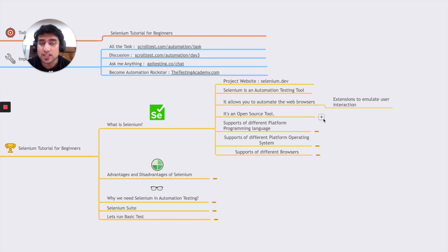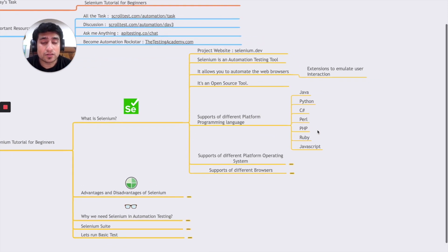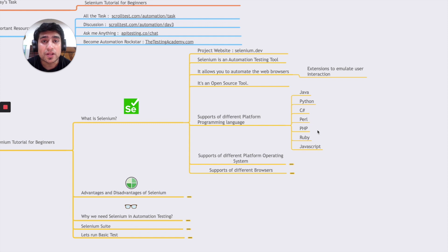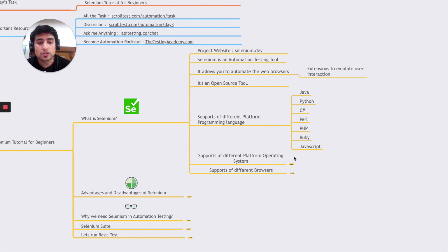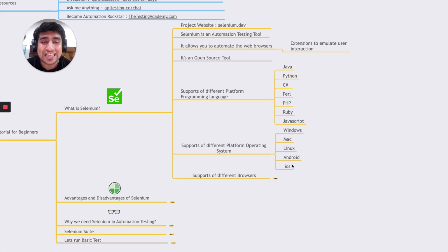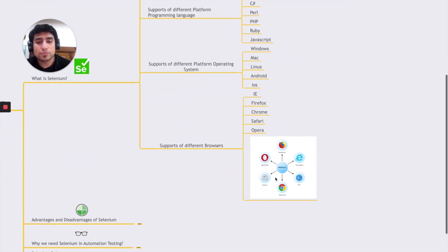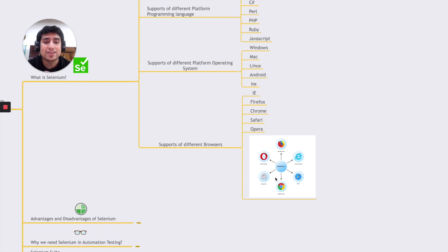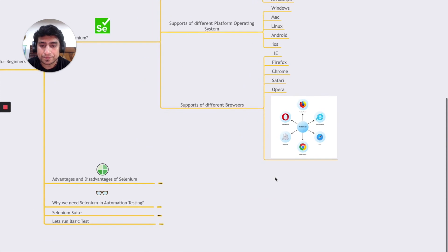Selenium essentially allows you to simulate user interaction. It's an open source tool. What makes it the most popular automation tool is that it supports multiple programming languages — Java, Python, C#, Perl, PHP, Ruby, JavaScript — these are the language bindings available. I'm going to do a practical demo in Java. It also supports different platforms like Windows, Mac, Linux, Android, and iOS, as well as different browsers like Firefox and most popular browsers.